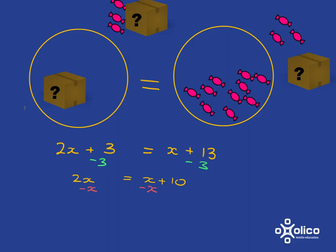What do I have left then? I've got 2x minus x, which is just x, and over here I've got 10. Showing me that one box of x sweets is equal to 10 sweets.